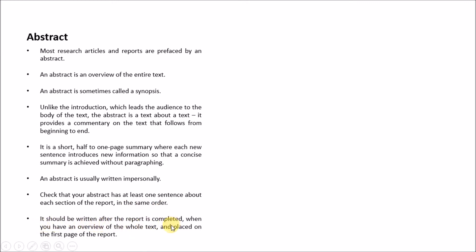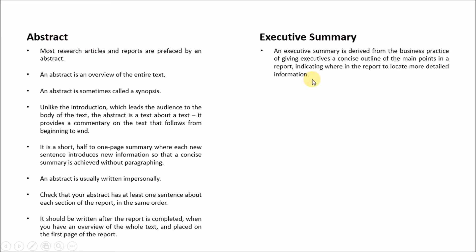Check that your abstract has at least one sentence about each section of the report, and it should be written in the same order. It is written after the report is completed — not at the beginning of your work, because at that stage we don't know everything. After conducting the research and finishing everything, only then we write the abstract at the end and place it at the beginning. Now, how is an executive summary different from an abstract? The executive summary is associated with corporate, not academic, work.